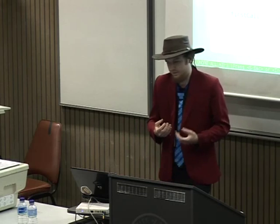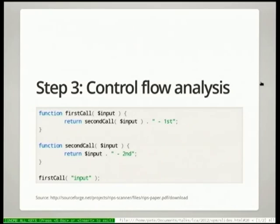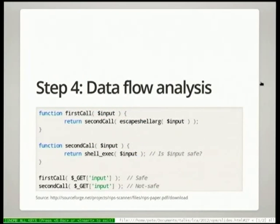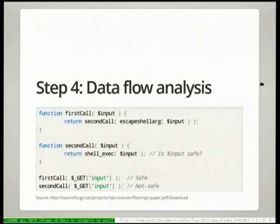Now that we've semantically analysed all the tokens, we have an abstract syntax tree of the code and we know what the code is going to do. We want to analyse all the different ways that control can flow through this program. We then follow data through these control flows and use taint analysis to find out if the data is tainted by the time it gets to something vulnerable. The first call method is completely safe because before it gets to the shell execute it has been escaped at a previous point. We can tell the second one is not safe because the user input goes directly to an execute function without being sanitised.